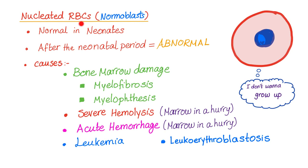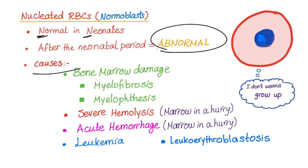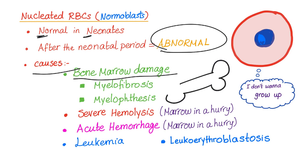Nucleated red blood cells, or normoblasts, are normal in neonates. After the neonatal period, they are abnormal. Causes include, but are not limited to, bone marrow damage — this could be myelofibrosis, or myelophthisis, which is bone marrow infiltration.